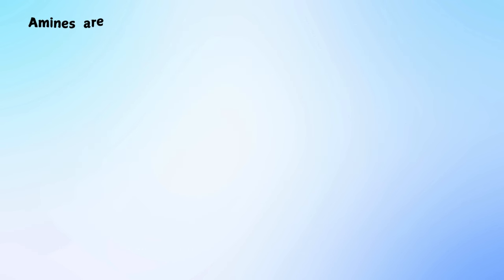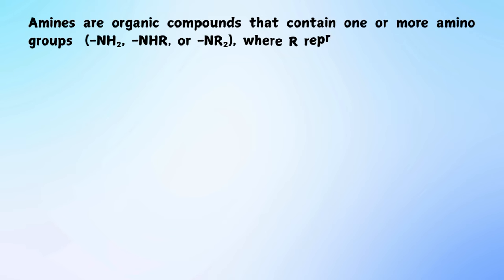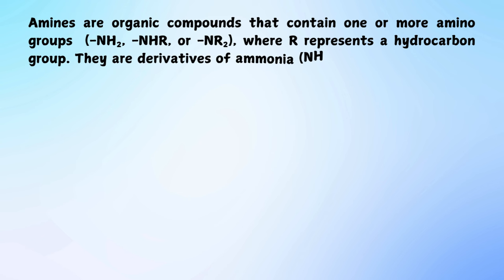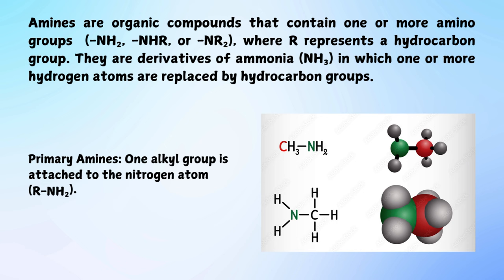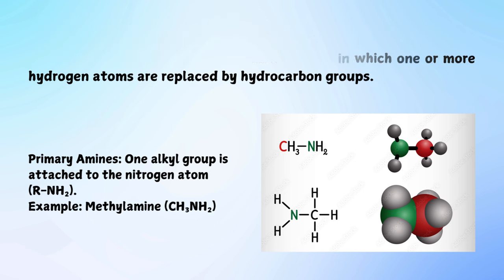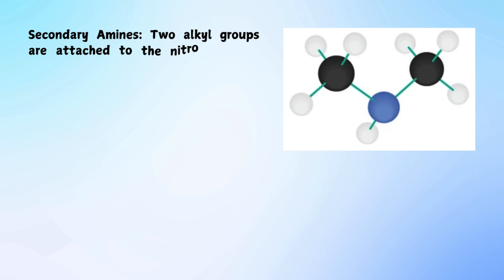Amines are organic compounds that contain one or more amino groups: -NH2, -NHR, or -NR2, where R represents a hydrocarbon group. They are derivatives of ammonia (NH3), in which one or more hydrogen atoms are replaced by hydrocarbon groups. Primary amines have one alkyl group attached to the nitrogen atom (R-NH2), for example methylamine. Secondary amines have two alkyl groups attached to the nitrogen atom (R2NH), for example dimethylamine.